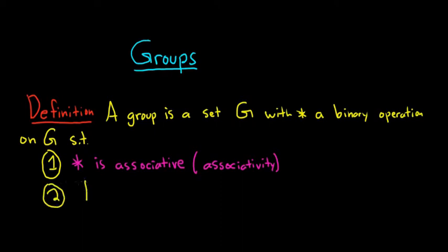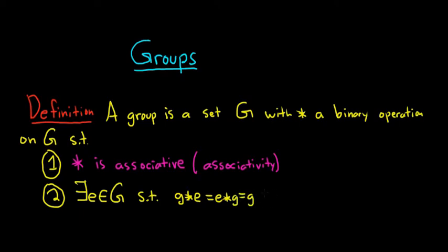There exists an element, which we'll denote by lowercase e, which lives inside G, such that when you take g on the left and star it with e, that's the same thing as e star g, and that's equal to g. This is called the identity element and must hold for all little g in capital G. This is often referred to as the existence of an identity element.